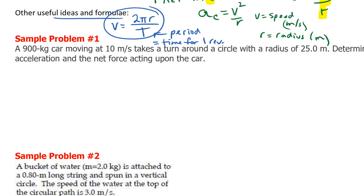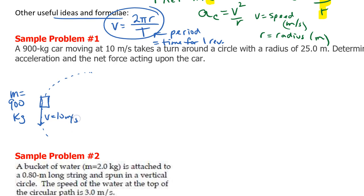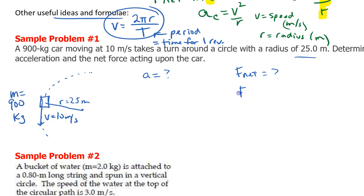Let's look at sample one: a car moving around a circle. I'll draw a diagram — the car is going around a circle, its mass is 900 kilograms, it's moving at 10 meters per second tangent to the circle, and the radius is 25 meters. We want to find the acceleration and the net force. We know F_net equals mv squared over r and a equals v squared over r.